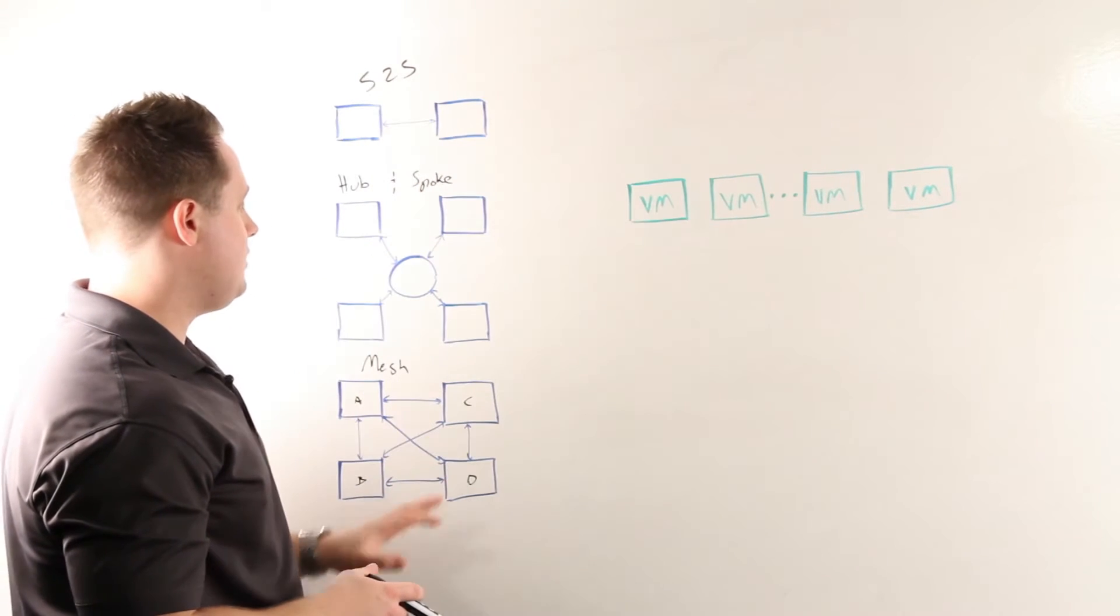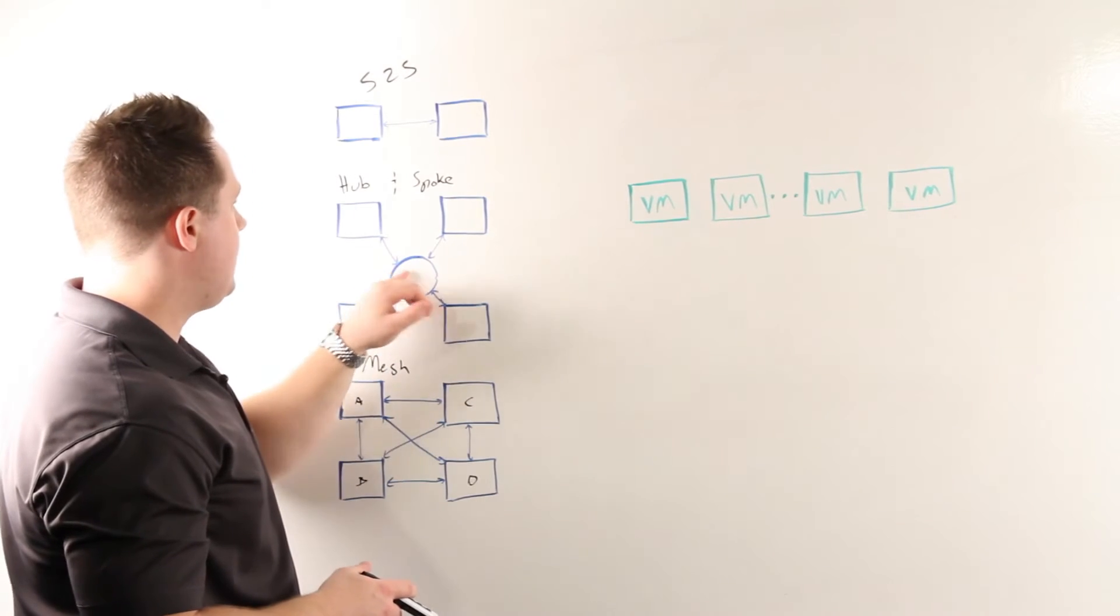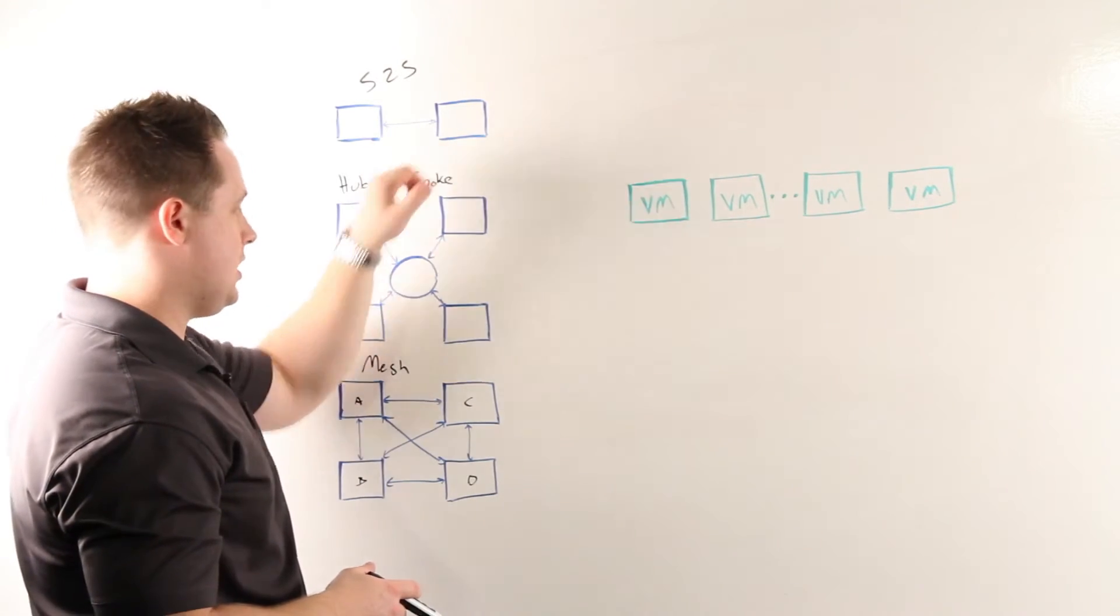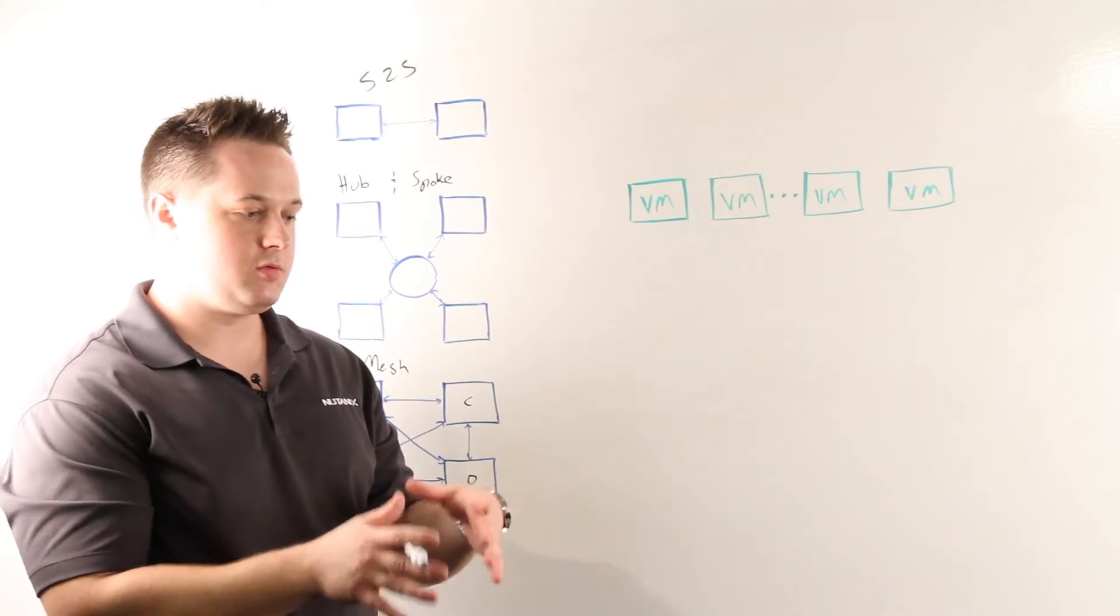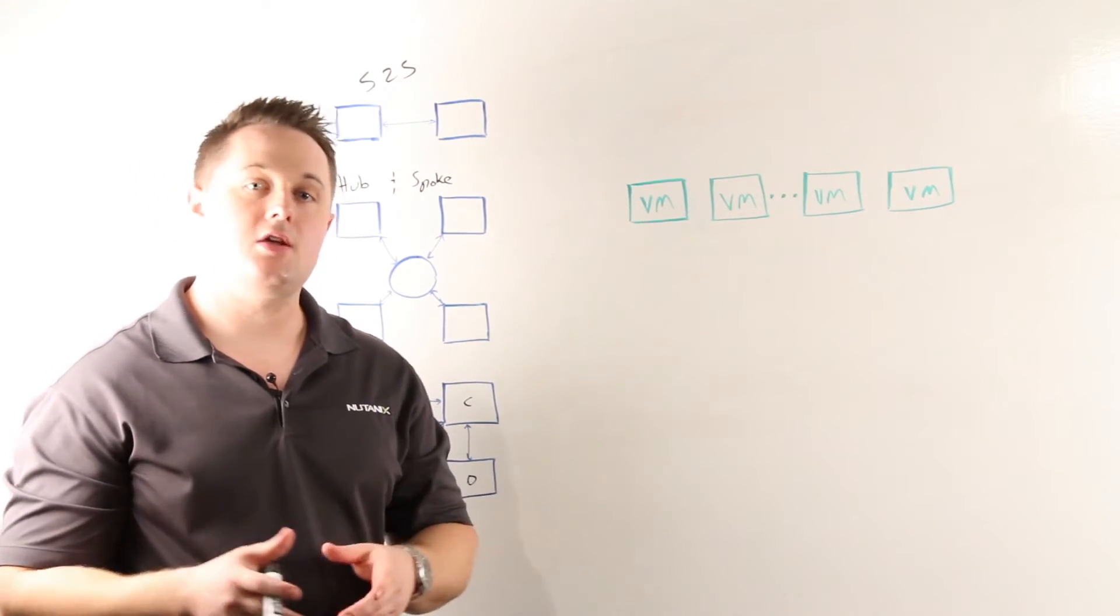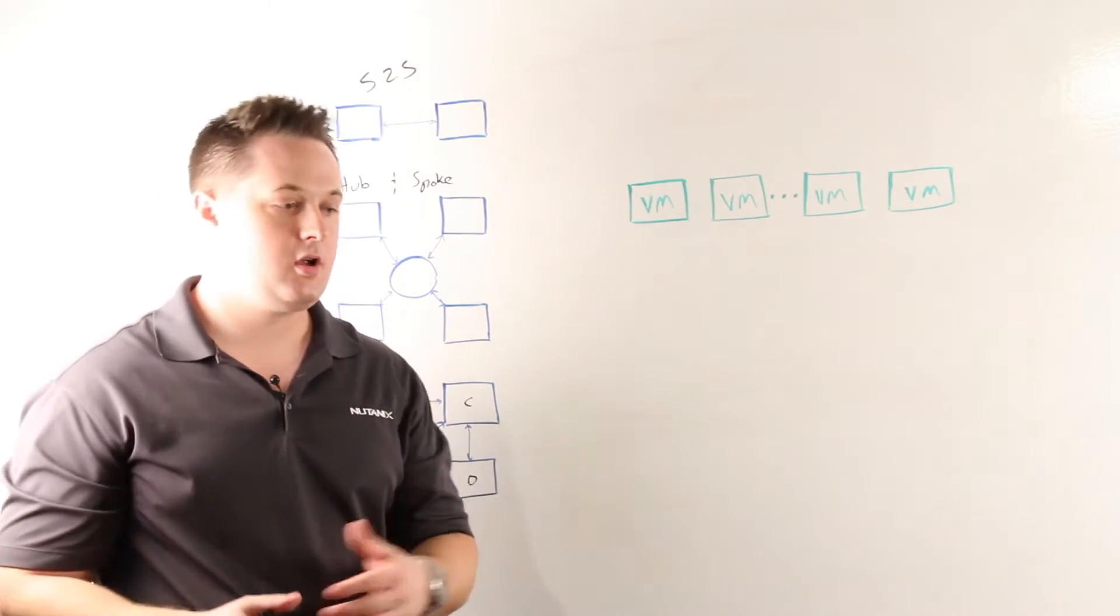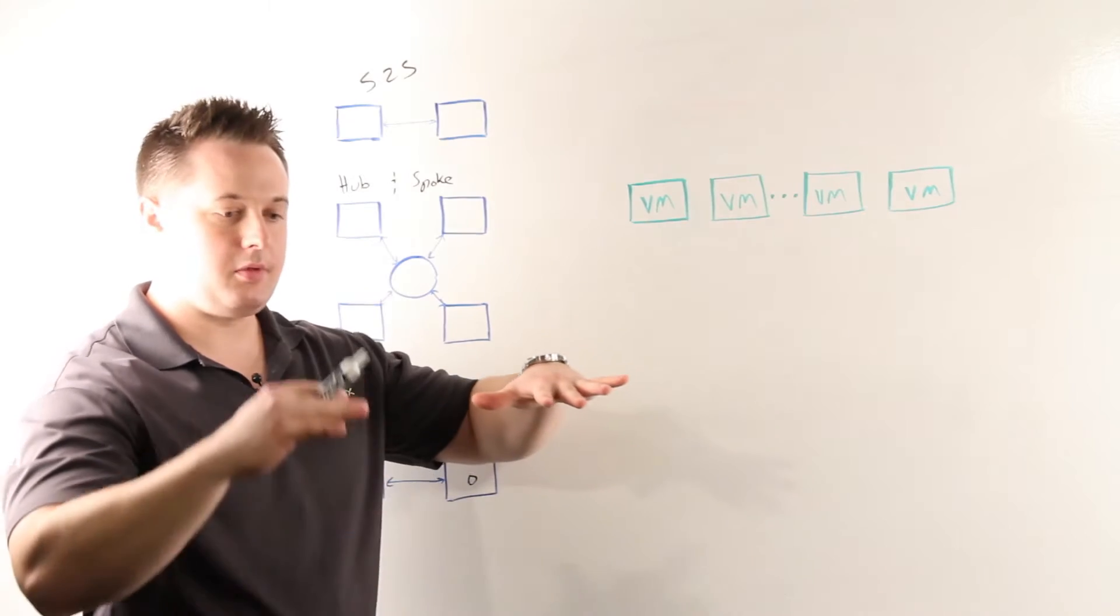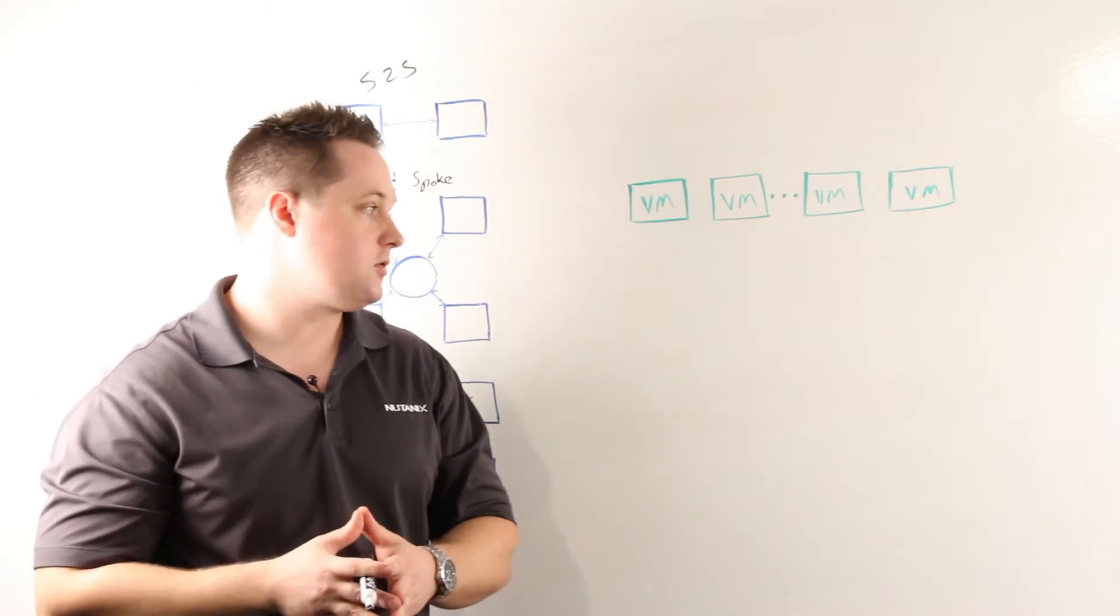The key thing for Nutanix is we actually support any of these configurations. You could have a combination between mesh and hub-and-spoke, or just use site-to-site. The other key thing to mention from a replication perspective is all the Nutanix controller VMs within a cluster actually participate in the replication. So if you're replicating from a 32-node cluster to a 32-node cluster, you have 32 controller VMs replicating with 32 other controller VMs, which is very efficient.